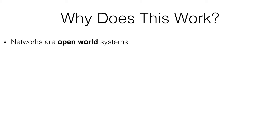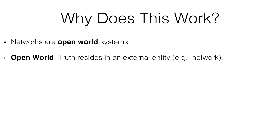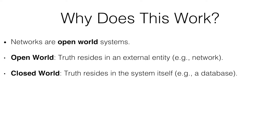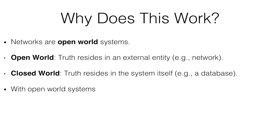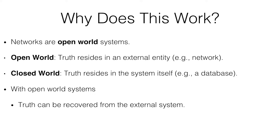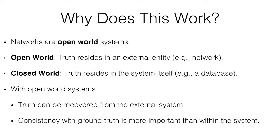The difference comes down to the fact that networks are an 'open world.' Open world here means that the truth about the network — what links are up, what flow tables are around — resides in the switches. This is very different from data stores where consistency has been super important, where there isn't something you can go refer to and ask what the current value is. With open world systems, you can recover the truth by querying the system. And consistency with ground truth matters a lot more than consistency within the system itself.